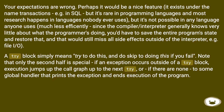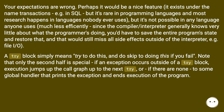Note that only the second half is special. If an exception occurs outside of a try block, execution jumps up the call graph to the next try block, or if there are none, to some global handler that prints the exception and ends execution of the program.